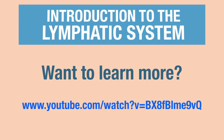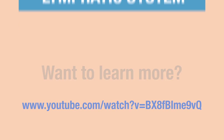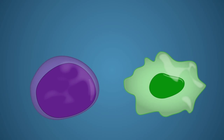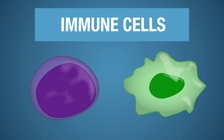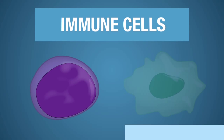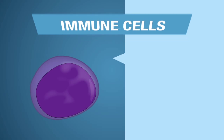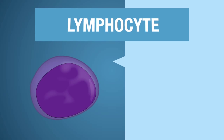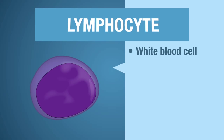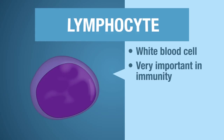To understand the lymphatic system, you need to know the players in this organ system. Several of these players include the immune cells. This little guy here is called a lymphocyte. This is a type of white blood cell that aids in an immune response.